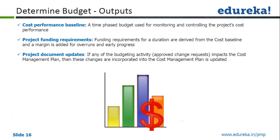Cost performance baseline — or cost baseline as per the PMBOK — is a time-phase budget used for monitoring and controlling project cost performance. When you actually start spending, you compare it against your cost baseline, which is part of your project management plan. Another output is project funding requirements — these are step-by-step funding releases, and funding requirements for a duration are derived from the cost baseline S-curve, with margin added for overruns and early progress.